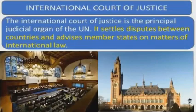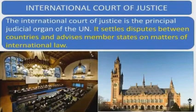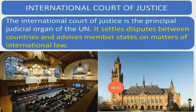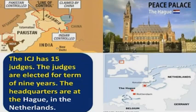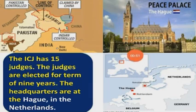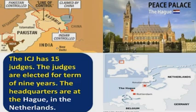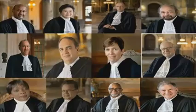International Court of Justice. The International Court of Justice is the principal judicial organ of the UN. It settles disputes between countries and advises member states on matters of international law. This is the building of the ICJ, called the Peace Palace, and it is located in The Hague, in the Netherlands. Disputes like the Kashmir dispute between India and Pakistan are settled here. The ICJ has 15 judges, elected for a term of 9 years.